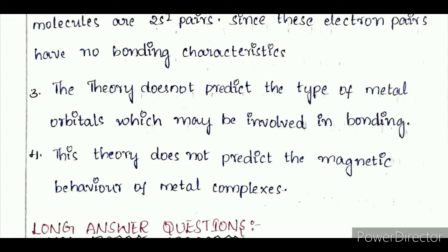This theory does not predict the magnetic behavior of metal complexes. There is no prediction of magnetic behavior; it only considers whether metals may be involved in bonding. There are no metal orbitals defined due to metal or ligand.